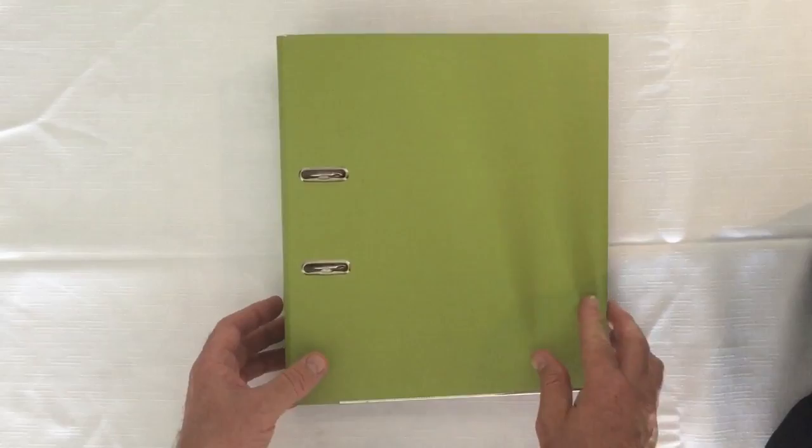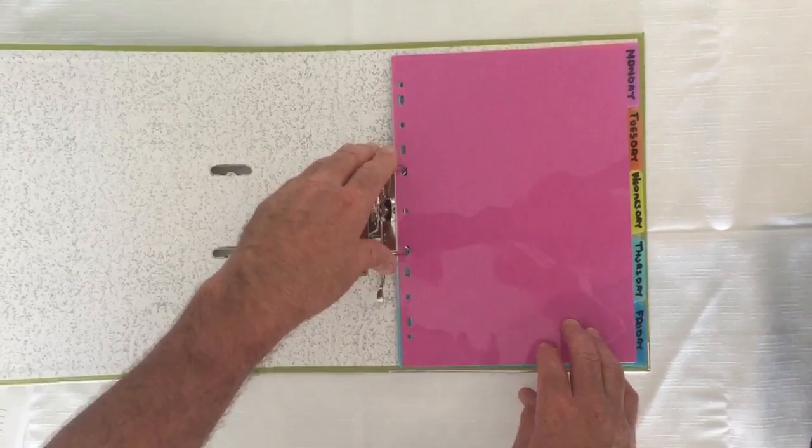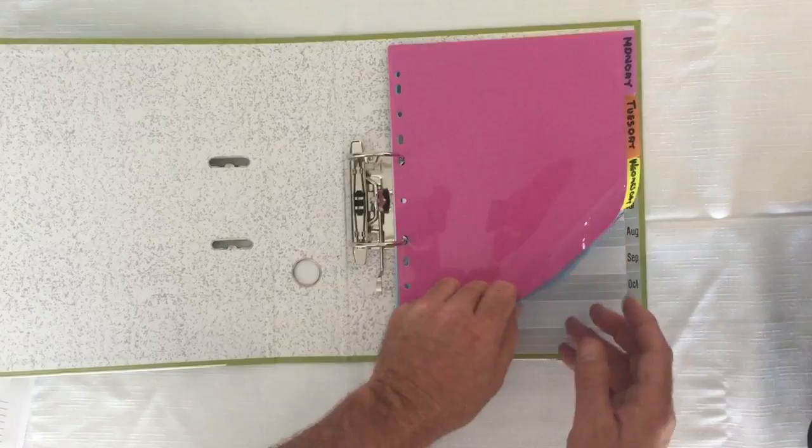The first thing you need is a lever arch folder. You need a good solid one like this, not the little ring binder one, just a good lever arch folder.